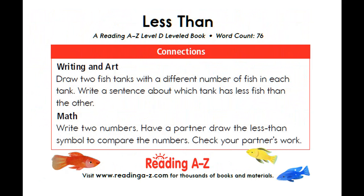Here are some activities you can do when you have finished reading the story. For writing and art, draw two fish tanks with a different number of fish in each tank. Write a sentence about which tank has less fish than the other. For math, write two numbers. Have a partner draw the less-than symbol to compare the numbers. Check your partner's work.